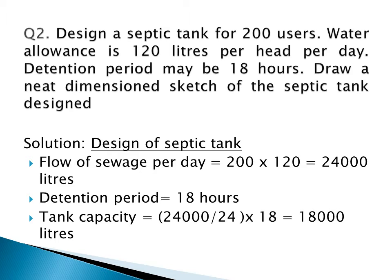The first step is to find out the flow of sewage per day. Per person, the water consumption is 120 liters per head per day. For 200 users, it is 200 multiplied by 120, which equals 24,000 liters. Converting to cubic meters by dividing by 1000, we get 24 cubic meters per day.